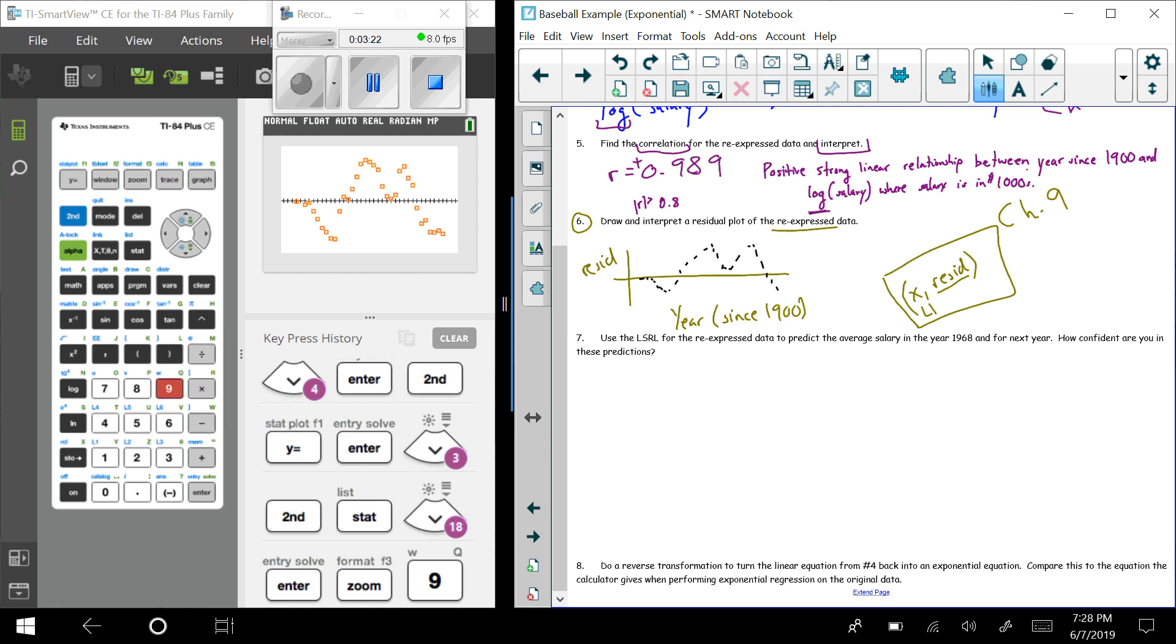Now ideally, we would not see any type of pattern here. And clearly, when I look at it, I do kind of see this general up and down slope kind of thing going on. Ideally we want to see random scatter. We don't see that here, and it makes us a little suspicious.